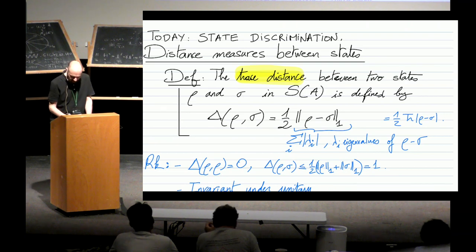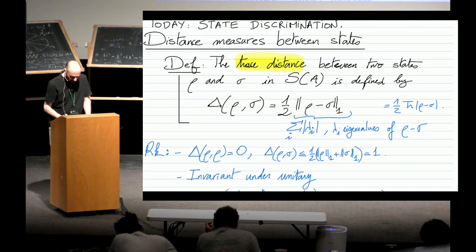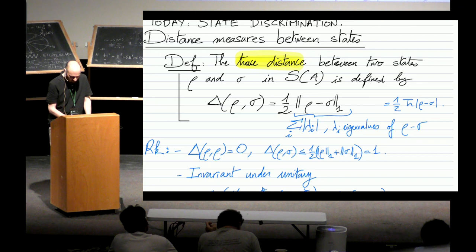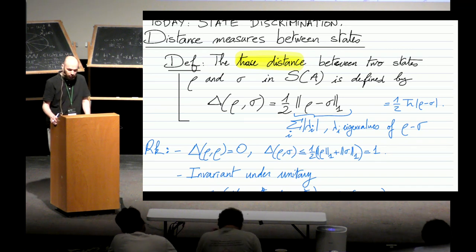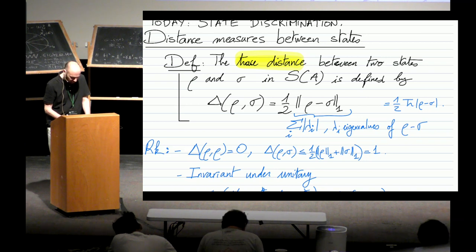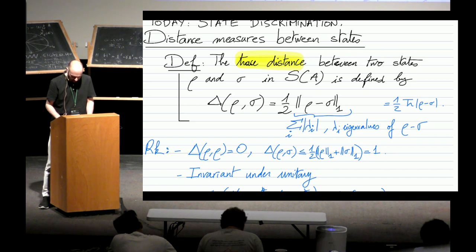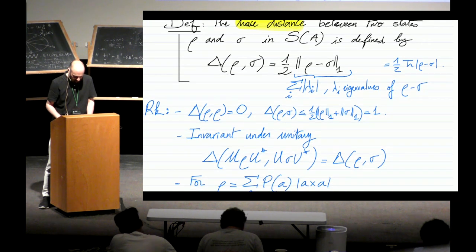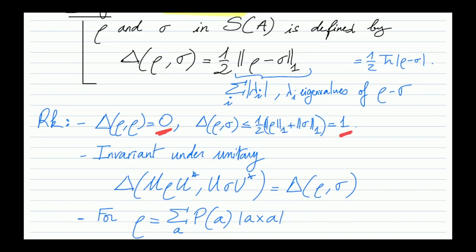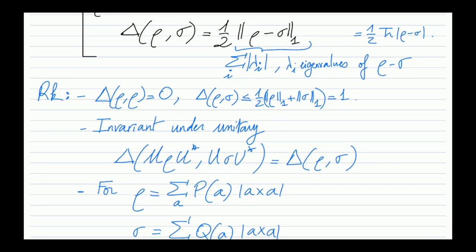Maybe the most famous distance measure between states is the trace distance, and we'll see how this relates to state discrimination. The trace distance between two quantum states rho and sigma is denoted delta between rho and sigma, defined as one half of the one-norm between rho and sigma — that is, one half the sum of the absolute values of the eigenvalues of rho minus sigma.